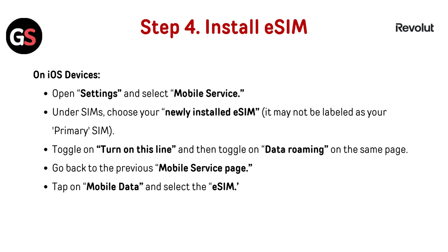Step 4: Configure eSIM on iOS. Open Settings and select 'Mobile Service.' Under SIMs, choose your newly installed eSIM — it may not be labeled as your primary SIM. Toggle on 'Turn on this line,' then toggle on 'Data Roaming' on the same page. Go back to the previous Mobile Service page, tap 'Mobile Data,' and select the eSIM.